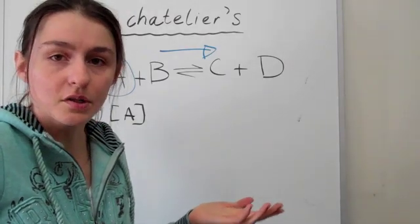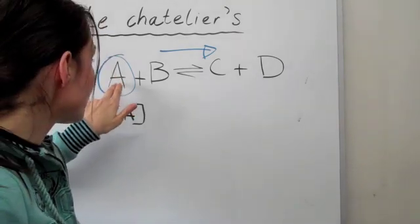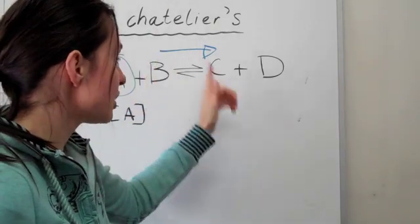You want to do the opposite, you want to decrease it. And the only way to decrease A is when you react it with B in order for it to turn into C and D.